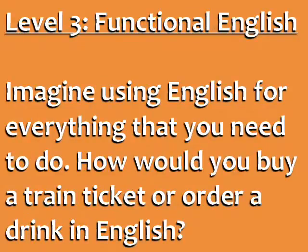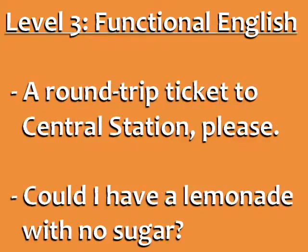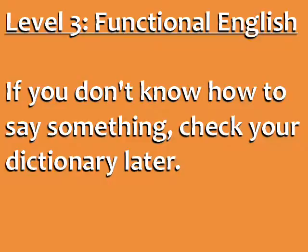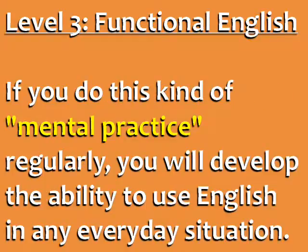Level 3: Functional English. On this level, you imagine having to use English for everything that you need to do. After every time you speak in your native language, think of how you would say that in English. For example, how would you buy a train ticket or order a drink in an English-speaking country? A round-trip ticket to Central Station, please. Could I have a lemonade with no sugar? This helps develop your English for real-life situations, even though you are only thinking and not speaking. If, during this exercise, you don't know how to say something, check your dictionary later. If you do this kind of mental practice regularly, you will develop the ability to use English in any everyday situation.